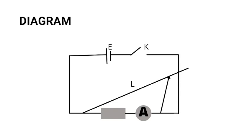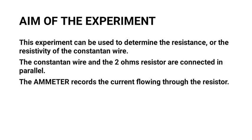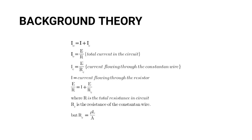In this circuit, the constantan wire and the resistor are still connected in parallel, meaning the current flowing through the circuit is shared between the constantan wire and the resistor. The ammeter will only be taking the current flowing through the resistor. The background theory is that the total circuit current i₀ equals i plus i_c, where i is the current through the resistor and i_c is the current through the constantan wire.